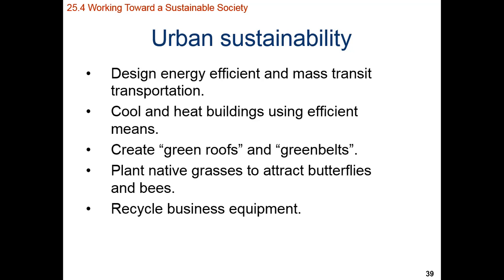Within an urban environment, some of the design challenges for sustainability include having energy-efficient mass transit and transportation. There's going to be a high impact if we can have mass transit within these urban areas. If we can find ways to cool and heat buildings using more efficient means — including green roofs and green belts — that helps significantly. In urban areas, there's going to be a low albedo, meaning a lot of excess solar energy is absorbed into buildings, causing urban areas to be warmer than their surrounding rural areas. Planting native grasses to attract pollinators on green roofs or green belts is an innovative practice.